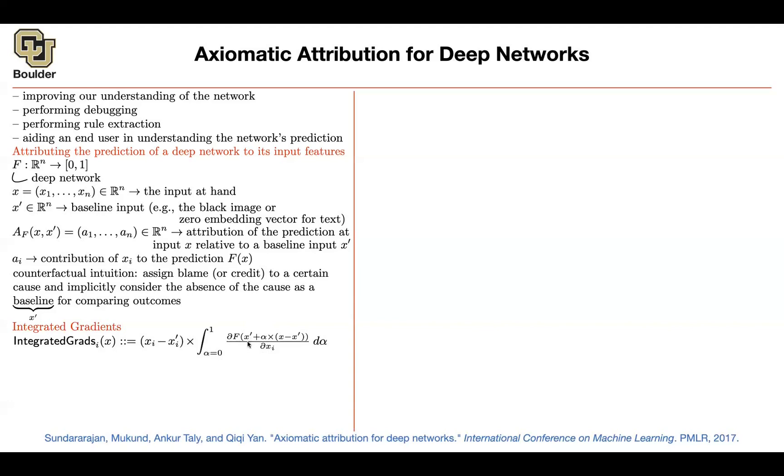And then similar to gradient times the difference, you're going to multiply it by the difference. Because here you're analyzing the existence or absence of a feature. How important is the existence of something? So you're putting a question mark on the existence of a particular pixel. And this integral is going to help you smooth out your gradients.